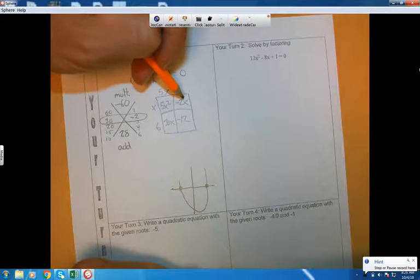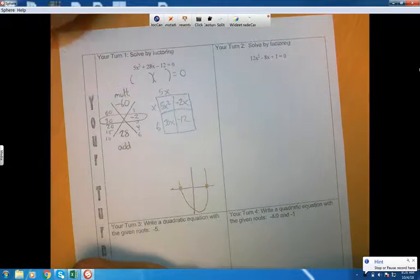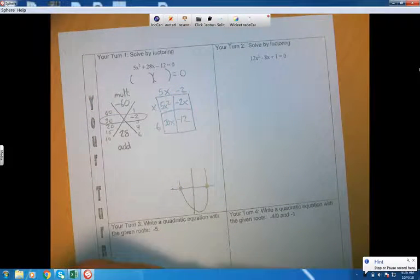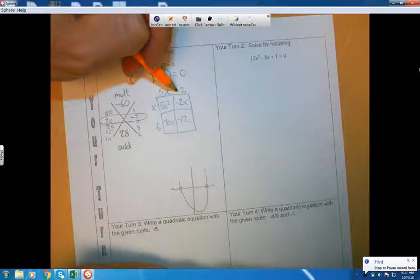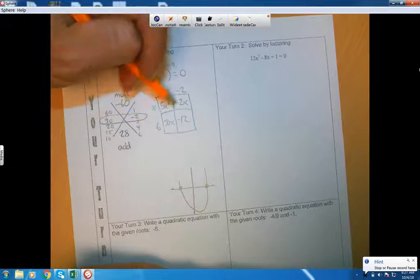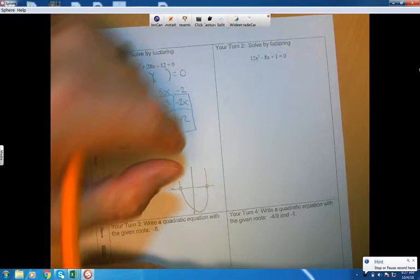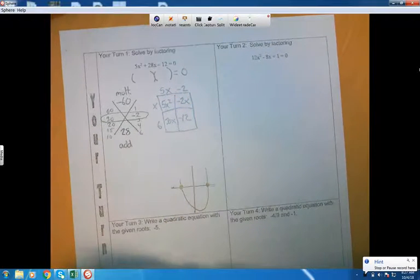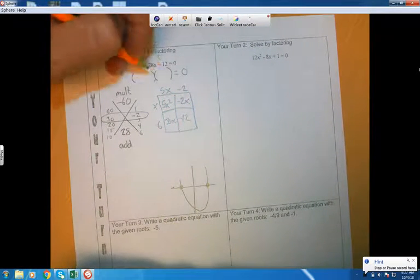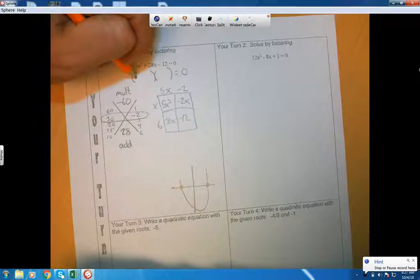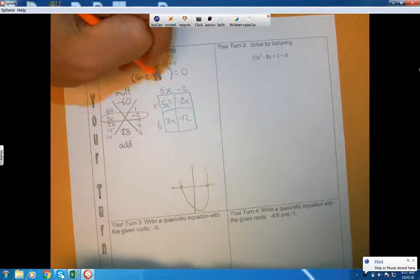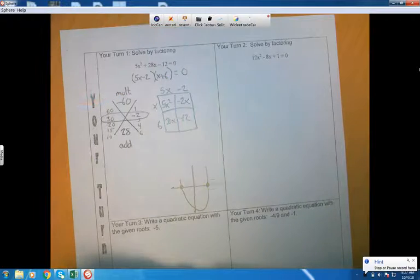5x times 6 is 30x. What would I have to times x by to turn it back into negative 2x? I'd have to times it by negative 2. So that will go right there. And then the last question I ask myself is, if I times negative 2 and 6 together, does that turn back into negative 12? The answer is yes. So I did it right. So my factors are 5x minus 2 and x plus 6.